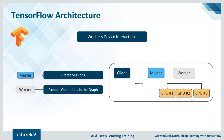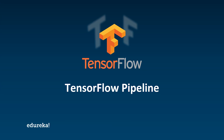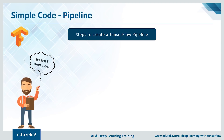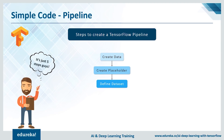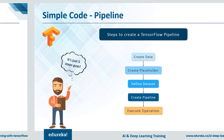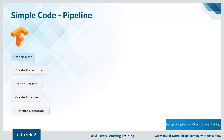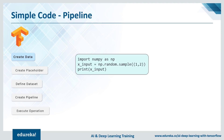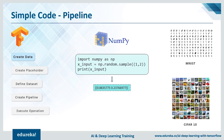Now that we're done with the architecture, let's look at some basic code examples on how the pipeline can be established. There are five simple steps: create the data, create the placeholder, define the data set, establish the pipeline, and lastly execute the operations. Creating data for the models is pretty simple — we use NumPy to generate random values. Data can also be obtained from datasets such as MNIST or CIFAR-10. TensorFlow already has ready loaders for this purpose, making it extremely simple to load data.